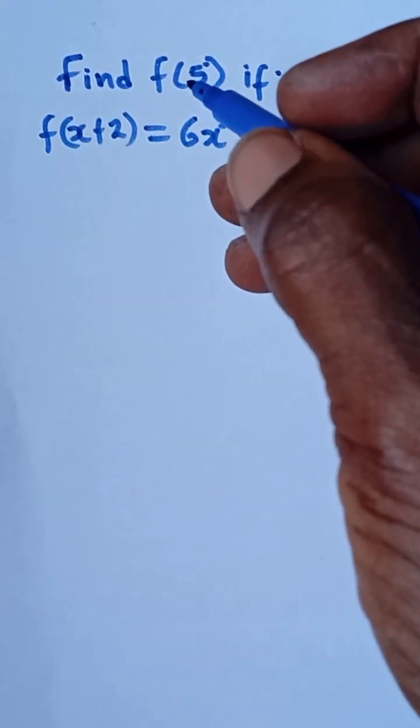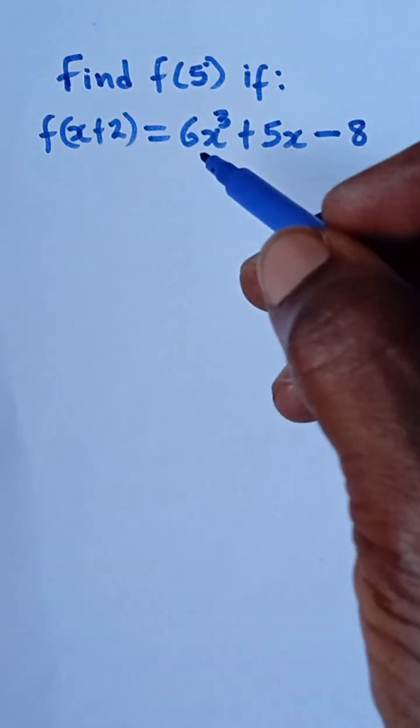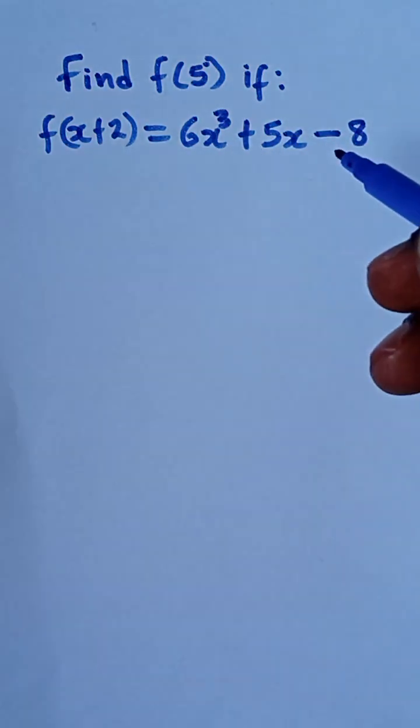Find f of 5 if f of x plus 2 is equal to 6x raised to the power 3 plus 5x minus 8.